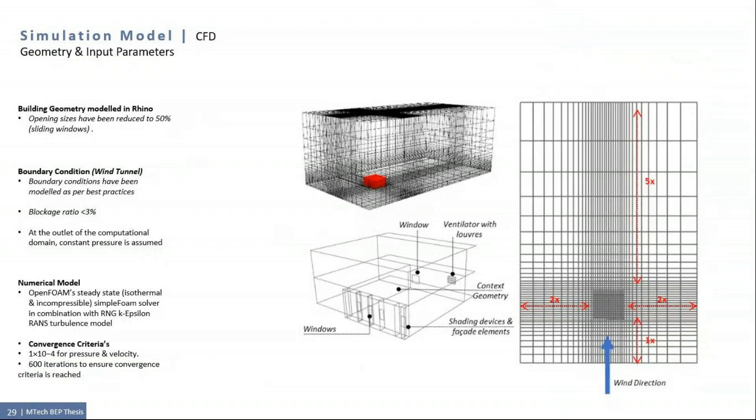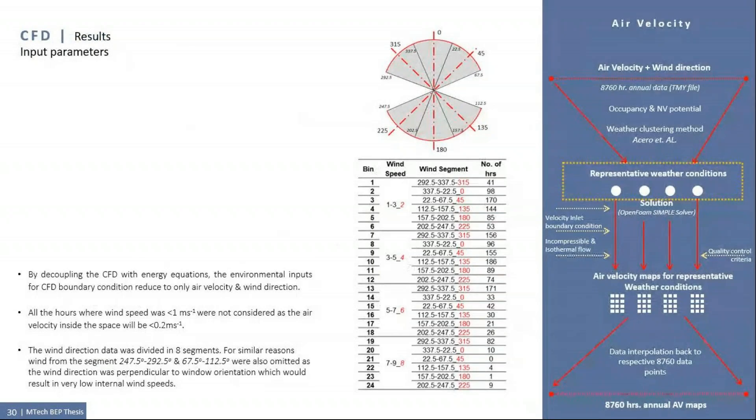The geometry was modeled in Rhinoceros neglecting the wall thicknesses. The window area has been reduced to 50% as the window configuration consists of sliding shutters. The classroom above it and the adjacent ones have also been included. The wind tunnel has been created using the best practices and a box-shaped wind tunnel was constructed with dimensions as shown in the figure on the right. And these dimensions are in respect to the building dimension. By decoupling the CFD with energy equation, the environmental inputs of CFD boundary condition reduced to only air velocity and wind direction.